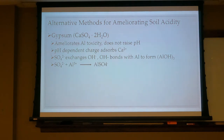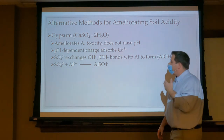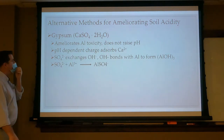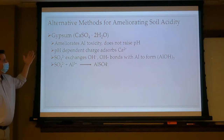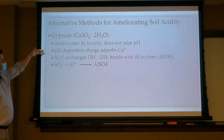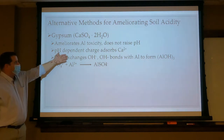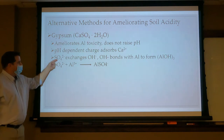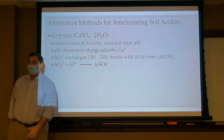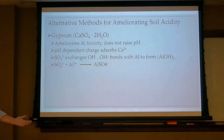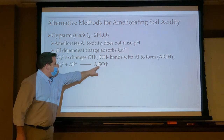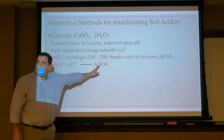For golf course situations, there is an opportunity to add gypsum — calcium sulfate — which will take away some of our aluminum toxicity but not raise the pH. When we add calcium sulfate, we undergo a hydrolysis reaction where the sulfur exchanges the hydroxyls and ultimately forms aluminum sulfate. So if you have a situation where you don't want to change your pH but you have aluminum toxicity — confirmed by a soil test — add gypsum to form this secondary mineral and it is neutralized.